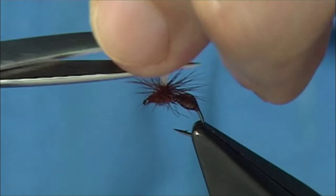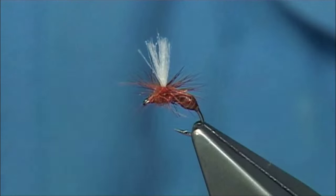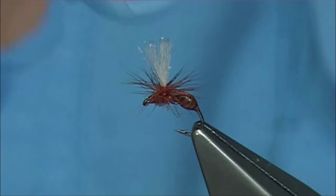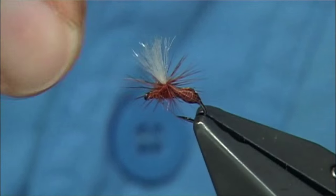For the length, don't be too short with the post. You can always trim it down if you need to. And there you go, that's the small ant pattern.